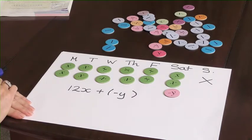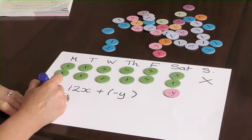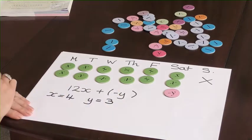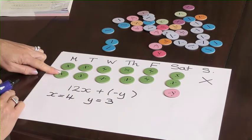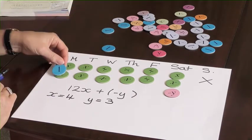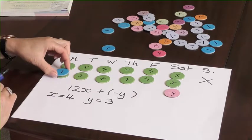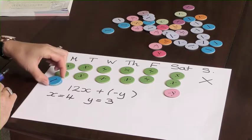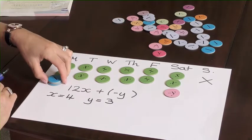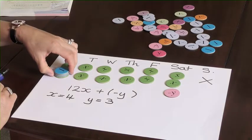The second part is how many hours does she work each week when X equals 4 and Y equals 3. So each X represents 4 hours. So I'm going to use the algebra discs to show this. So I've got 1, 2, 3, 4 hours for each of the X's.